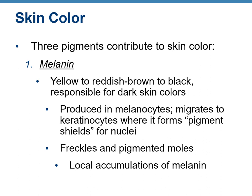Skin color: three pigments contribute to skin color. Melanin varies from yellow to reddish-brown to black. It is produced by melanocytes and then migrates to keratinocytes, where it shields the nucleus and protects it from UV radiation. Freckles and moles are local accumulations of melanin.